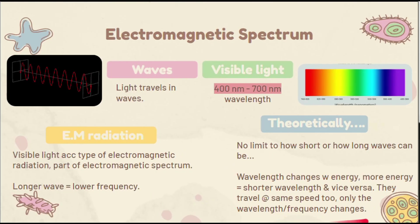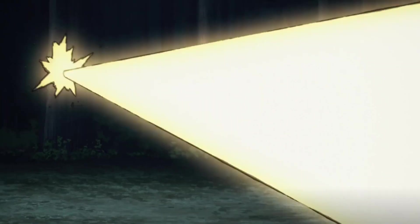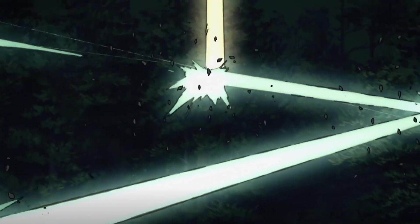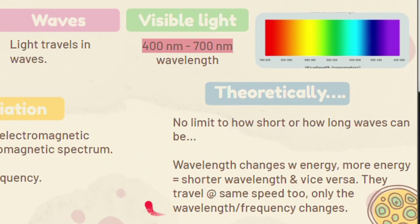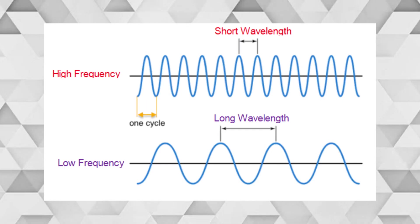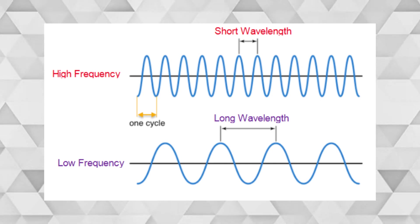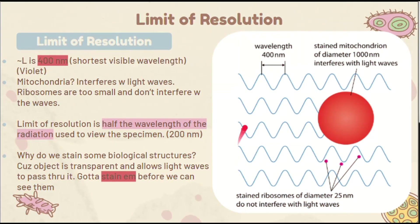Keep in mind that the wavelength changes with energy. The more energy the wave has — the more hyper it is — the shorter its wavelength, and vice versa. Their speed is unaffected; just their wavelength and frequency change.